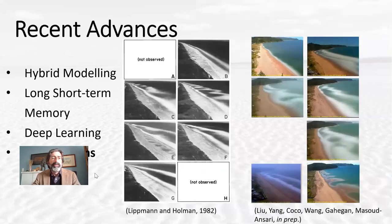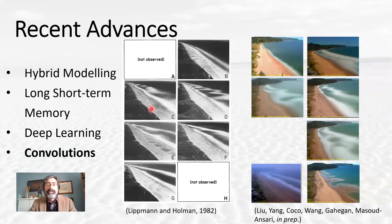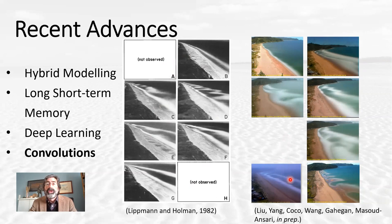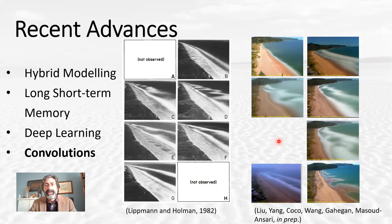Convolutions are also becoming more and more popular. Here is another application we are working on, thinking of the Lippmann and Dalhman classification scheme. We have a very large 20-year dataset from a beach in New Zealand, and we developed using convolutional neural networks a classification scheme that allows us to train the code with a limited number of images. The code itself is then capable of classifying with 90% accuracy all the other images. We noticed that, for example, at this beach there are a couple of states that are not present at Duck, where Lippmann and Dalhman conducted their studies, and some states that do not seem to appear at this beach at all.